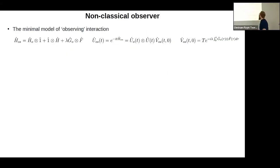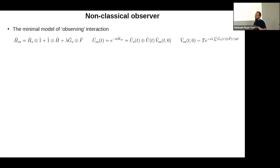If not a classical observer, then a non-classical observer — basically any other quantum system O that is brought into contact with system S that we are measuring. For the system to observe observable F, the interaction between them has to involve operator F in some way. The minimal model of this kind of observing interaction has a pre-evolution in O, a pre-evolution in S, and the simplest form of coupling that involves F: some operator G_O on the side of O and our observable F.